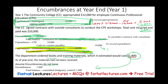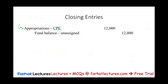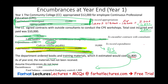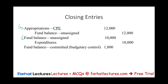Cash stays on the balance sheet — the statement of net position or fund balance. After closing the budget and expenditure, I'm left with the encumbrance of $1,800 that also needs to be closed. Even though it does not lapse, I close it at year end and reopen it next year. To close: credit encumbrances $1,800 and debit fund balance committed $1,800. All budgetary accounts are now closed for year one.